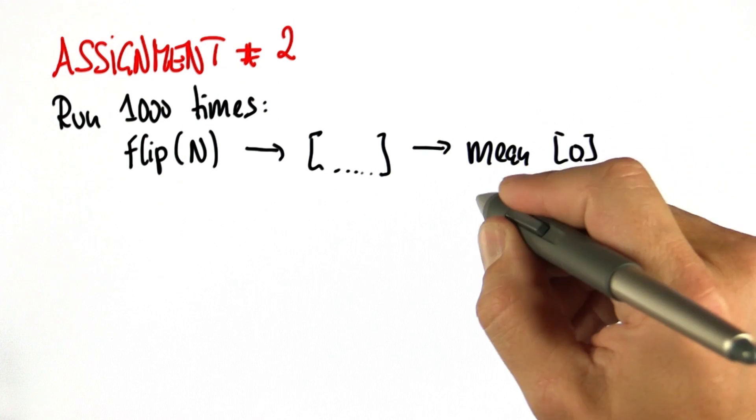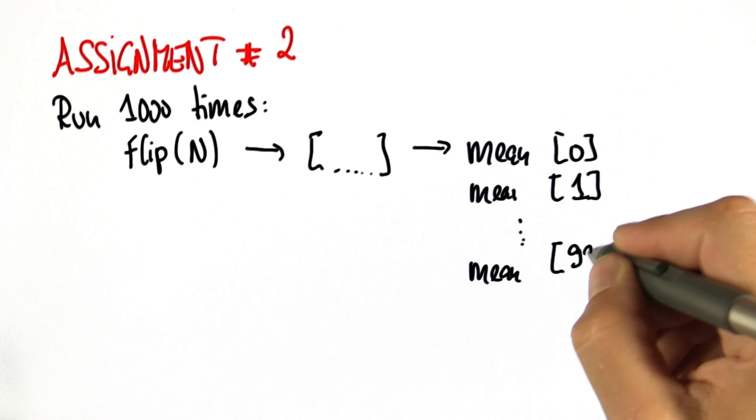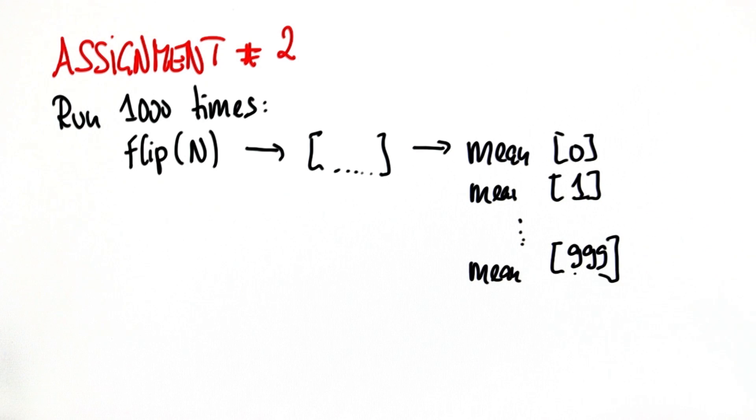So there's mean 0, mean 1, and so on, all the way to mean 999. And these means are continuous values, obviously, between 0 and 1.